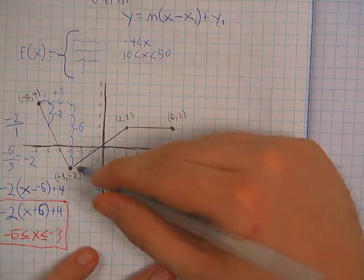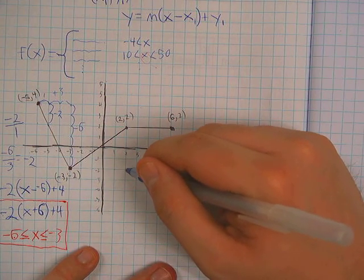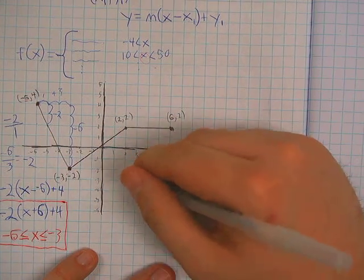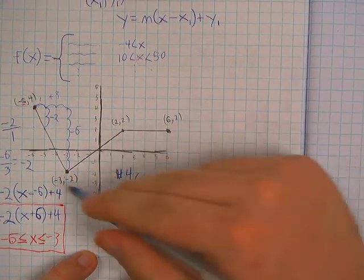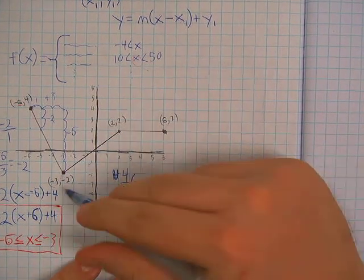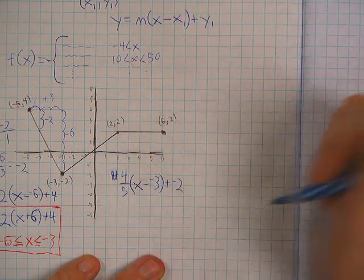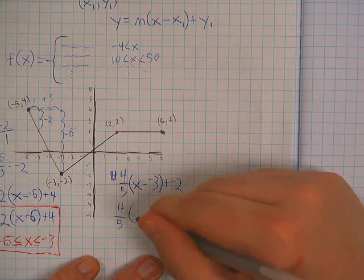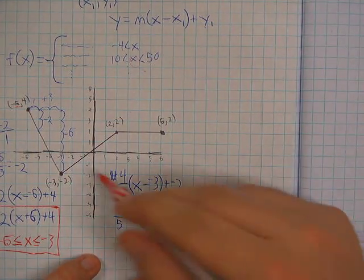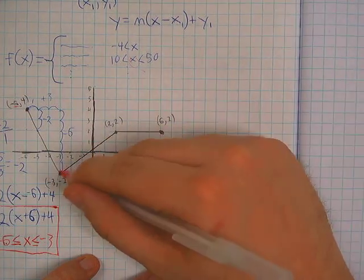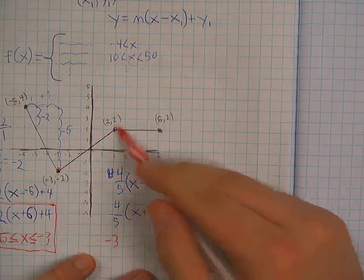We can do the same thing for the next two segments. This segment has a run of five and a rise of four, so it has a slope of four-fifths. I'll use this first coordinate as my point: x minus negative three plus my y-coordinate negative two. Simplifying: four-fifths times x plus three minus two.